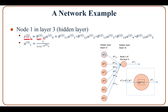z³₁ is equal to theta²₁₀ — theta at layer two connecting node one in layer three to node zero in layer two — times a²₀, where a²₀ is the output at layer two, node zero, which equals one. Plus theta²₁₁ — layer two connecting node one in layer three to node one in layer two — times a²₁, the output at layer two, node one. And similarly for the other terms.